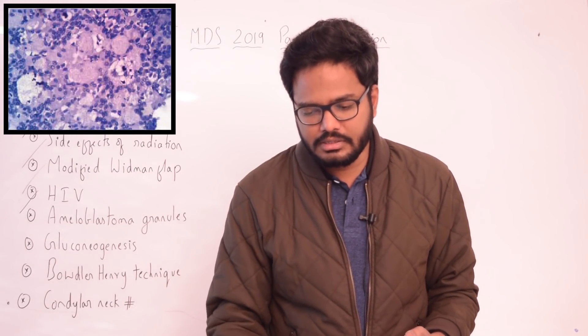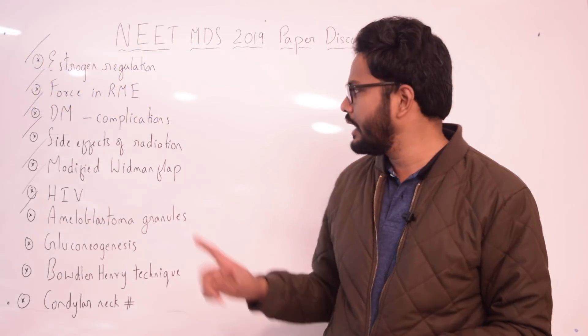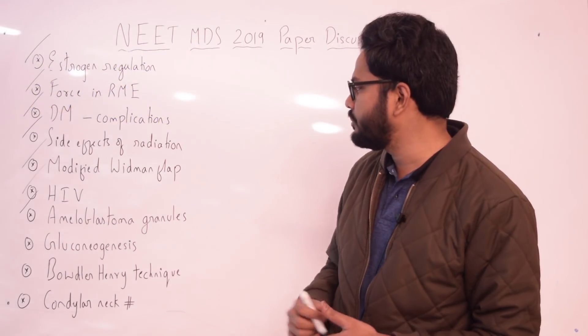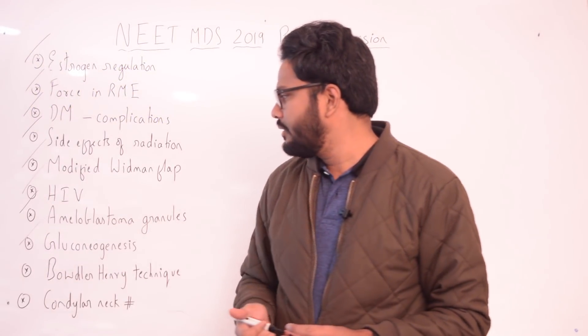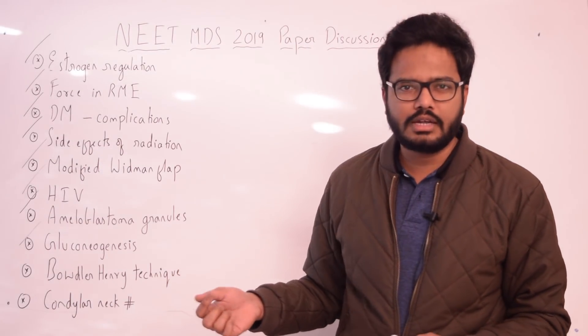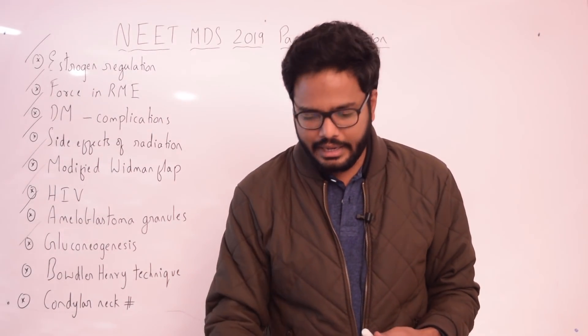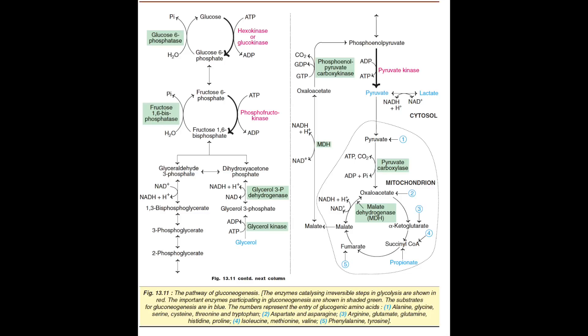Ultrastructural studies by Tandler and Rossi have shown that these cytoplasmic granules represent lysosomal aggregates with no recognizable cellular component. The next topic is gluconeogenesis — specifically which enzymes are present in mitochondria. Gluconeogenesis is the synthesis of glucose from non-carbohydrate compounds such as lactate, pyruvate, amino acids, and glycerol.